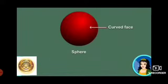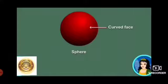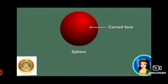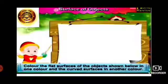Observe this shape — this is a sphere. It looks like a football. It has zero edges, zero corners, and one curved face. Just as we have a straight line and a curved line, in the same way we have flat and curved faces. To understand this, we will do an activity: color the flat surface of the object shown in this picture in one color and the curved surface in another color.